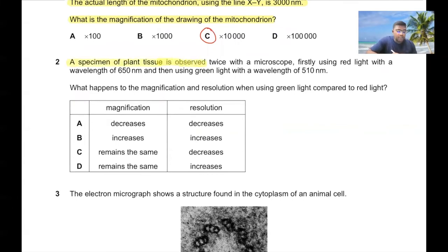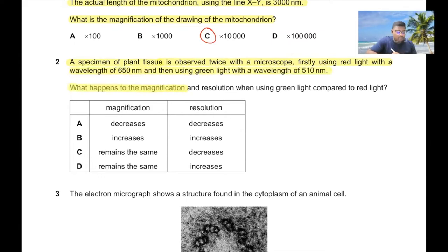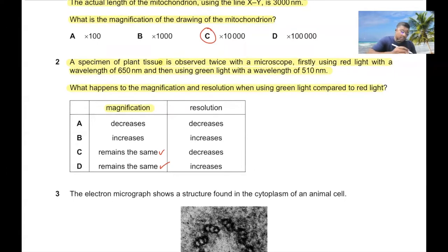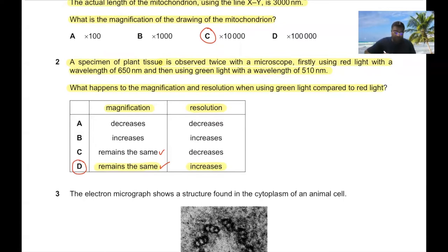Question 2: A specimen of plant tissue is observed first using red light with a wavelength of 650 nm, then using green light with a wavelength of 510 nm. Magnification doesn't change because we're just changing the light. However, since green light has a smaller wavelength, the resolution will increase — the smaller the wavelength, the higher the resolution. So for question number 2, option D.